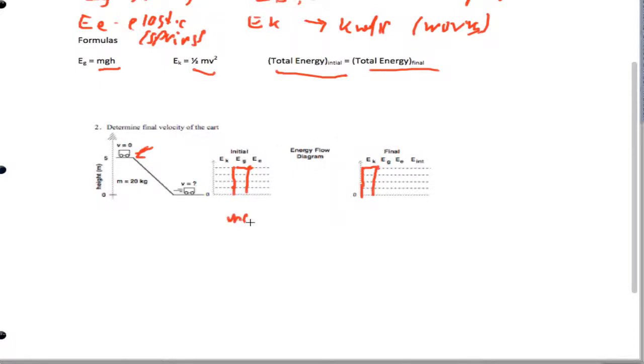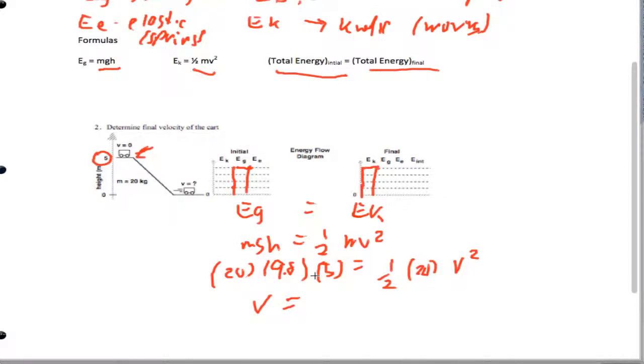So in this case, you're going to end up getting MGH equals 1/2—actually, slow down. The gravity bar graph equals the kinetic energy bar graph. So we have MGH equals 1/2 mv squared. We put in our numbers, so we're going to end up getting 20 times 9.8 times the height of 5 meters ends up equaling 1/2 times the 20 times v squared. We actually end up solving, and what we end up getting for our answer for the speed is 9.9 meters per second. Excellent.